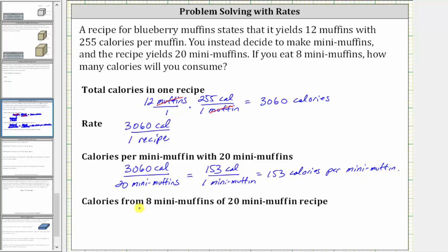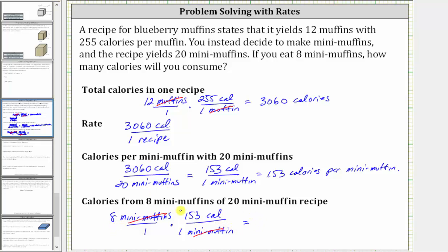Finally, we'll determine the number of calories from eight mini muffins of the 20 mini muffin recipe. Now we know each mini muffin contains 153 calories, and therefore to determine the number of calories in eight mini muffins, we take eight mini muffins and multiply by the rate of 153 calories per one mini muffin. The units of mini muffins simplify out, leaving us with calories, and eight times 153 is equal to 1,224 calories. So if you eat eight mini muffins, you consume 1,224 calories.